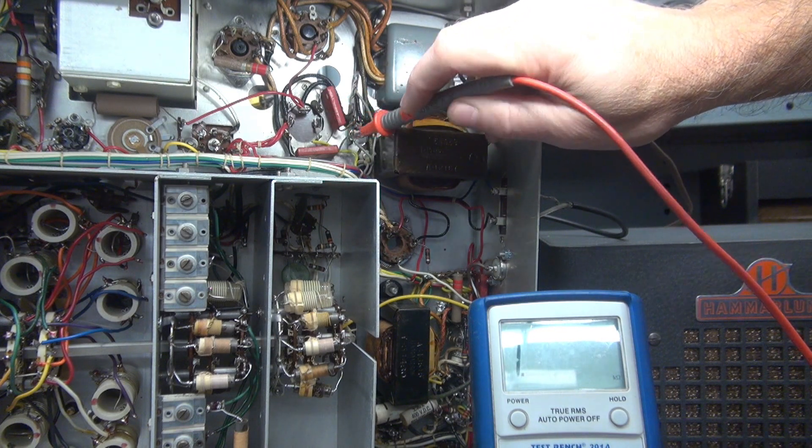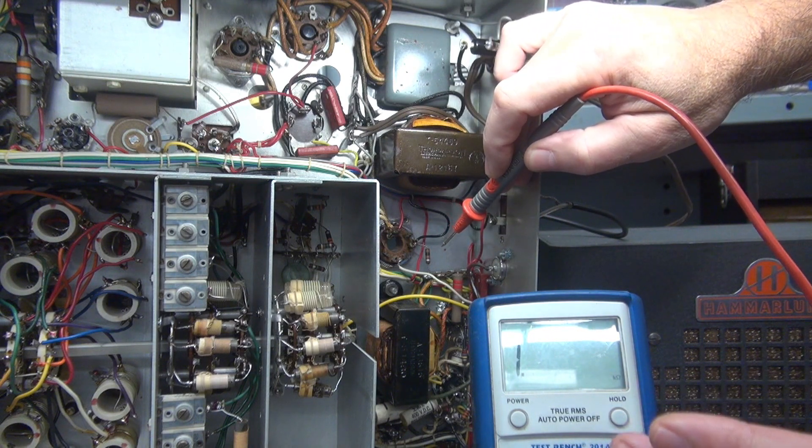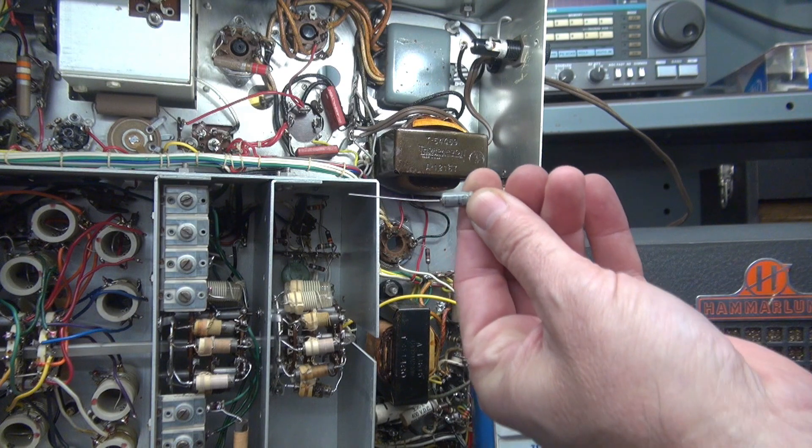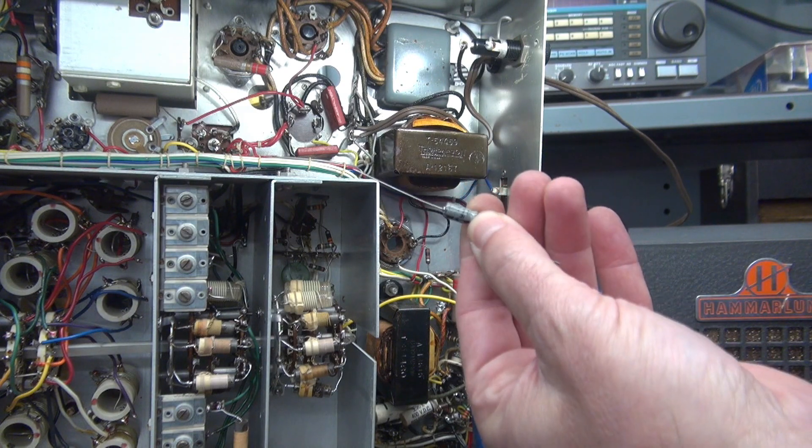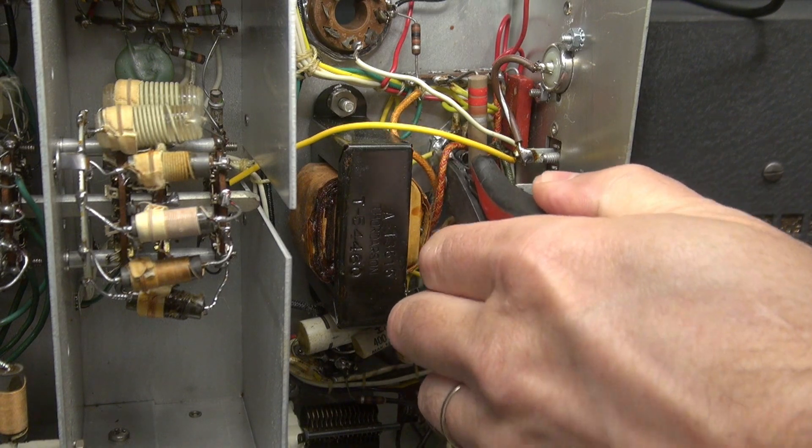So what I'm going to do is go down right on the 6AQ5 pin 2 and I'll put a replacement 22 microfarad 50 volt cap at that point. So it's super tight working in here.